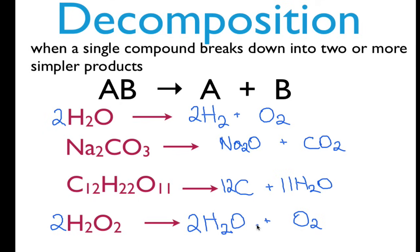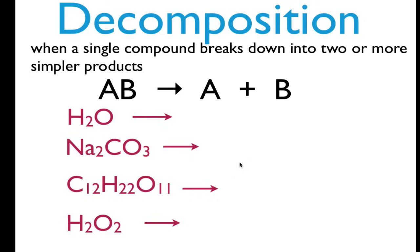So those are all decomposition reactions. We can identify those because we know we have a single compound on the left-hand side of our chemical equation as the reactant, and then we're going to break that down into simpler products. And those can be either elements or compounds. Thank you very much. I hope that was helpful, and we will see you next time.